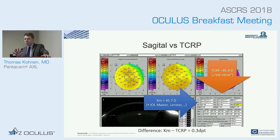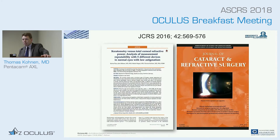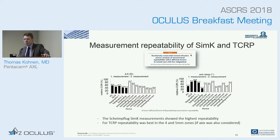We have done three studies. One is on corneal power, the next on axial length, and briefly at the end, on IOL calculation. In a 2016 paper, we did a keratometry measurement of total corneal refractive power with different devices. It was a 45-patient case series with astigmatism limited up to three diopters, using five devices: a keratometer, an ATLAS device, an IOL Master, Lenstar, and the Scheimflug tomographer, with two measurements per patient. The Scheimflug SimK measurement showed the highest repeatability in this study, and the total corneal refractive power repeatability was best in the 4 to 5 millimeter zone.